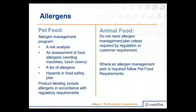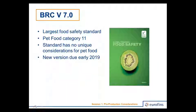The BRC food safety standard is the largest food safety certification in the world. The pet food category is category 11 of the 18 BRC categories. The standard has no unique considerations for pet food — it's treated just like human food, requiring high-care or high-risk controls depending on your process. In October of this year, we will see a new version — version 8. SQF just came out with their new version in January of this year. This is because GFSI came out with their new version in 2017, so all recognized standards have to make revisions to maintain recognition.